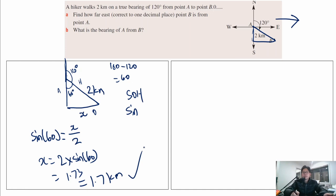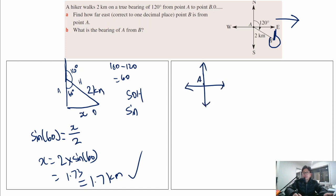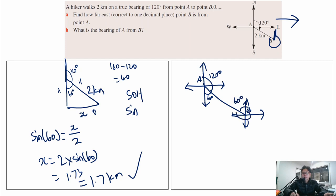What is the bearing of A from B? We start from point B, face north, and go clockwise. Drawing the diagram: point A at top, point B below. The original angle is 120 degrees, so the supplementary angle is 60 degrees. This is an alternate angle, so the angle at B is also 60 degrees. Our bearing of interest is the large clockwise angle, which is 360 minus 60 = 300 degrees. So the true bearing of A from B is 300 degrees true.